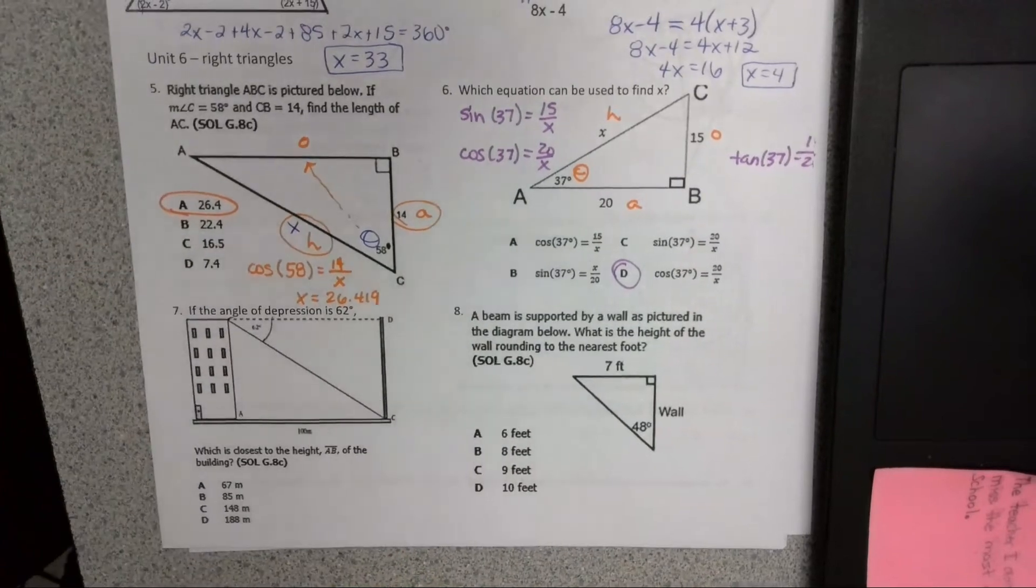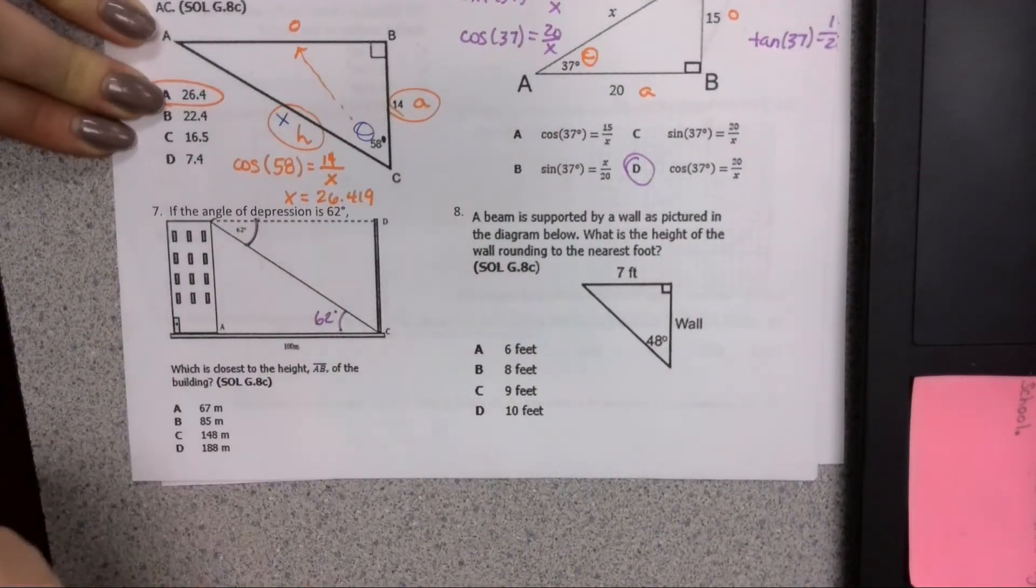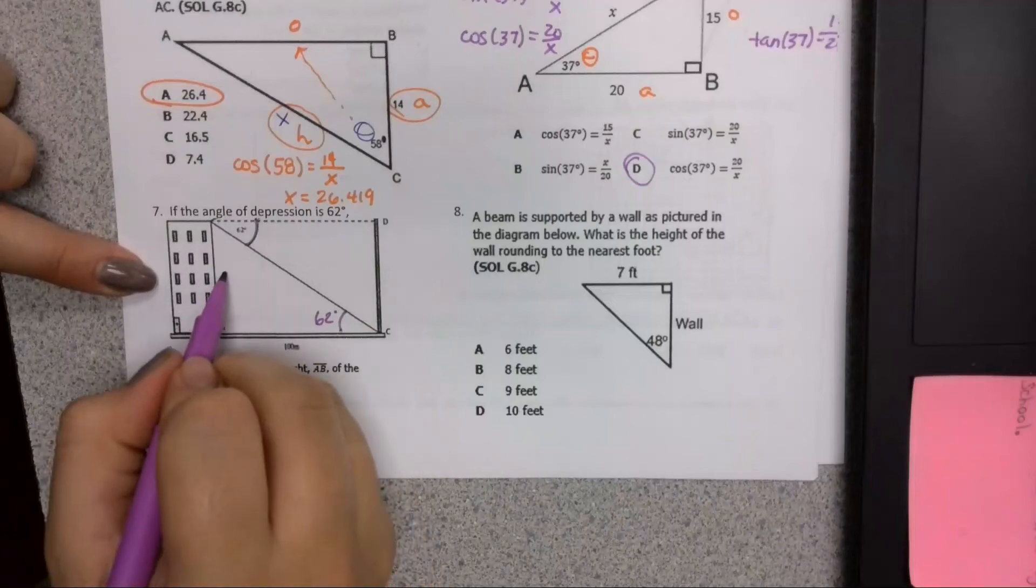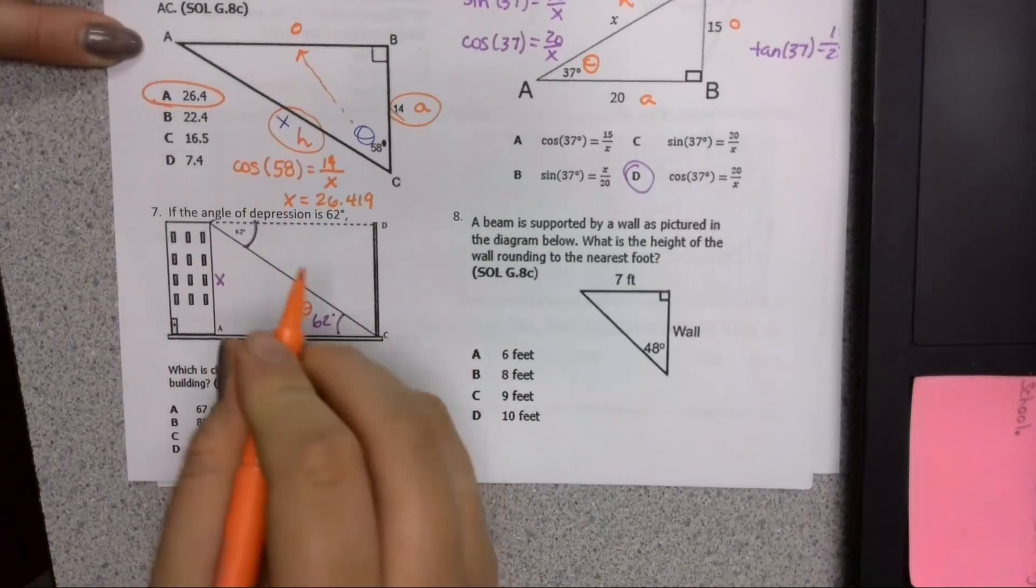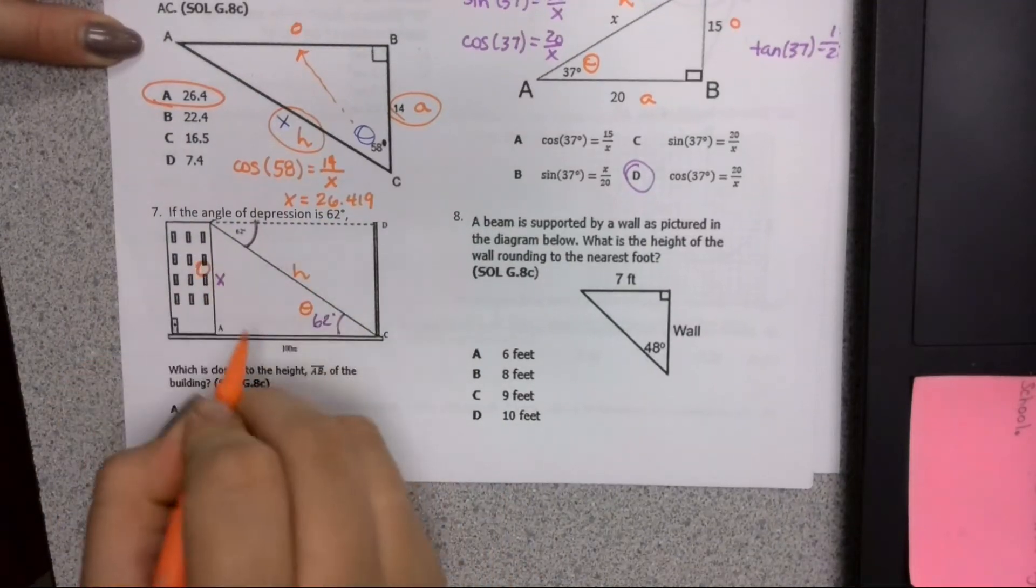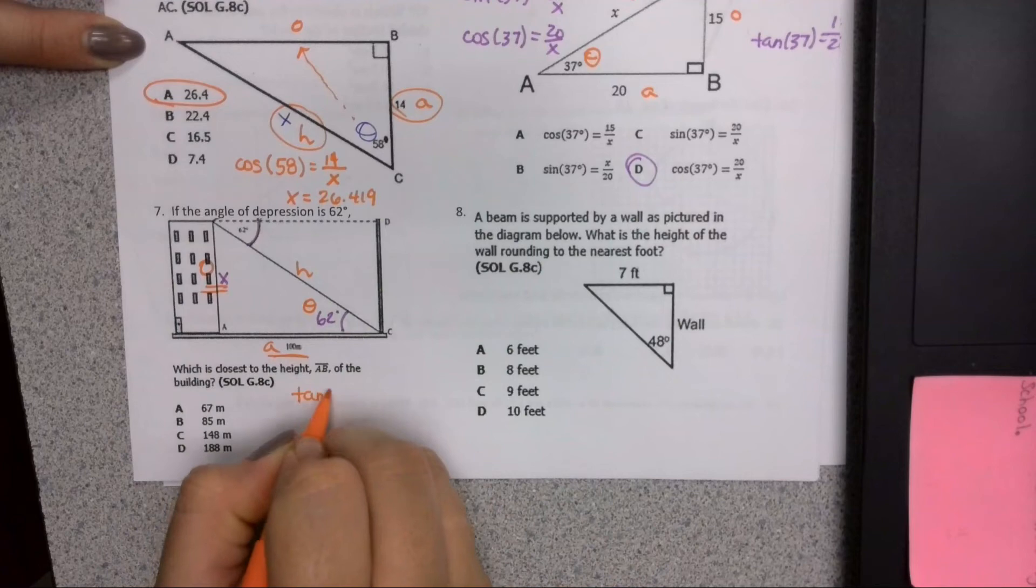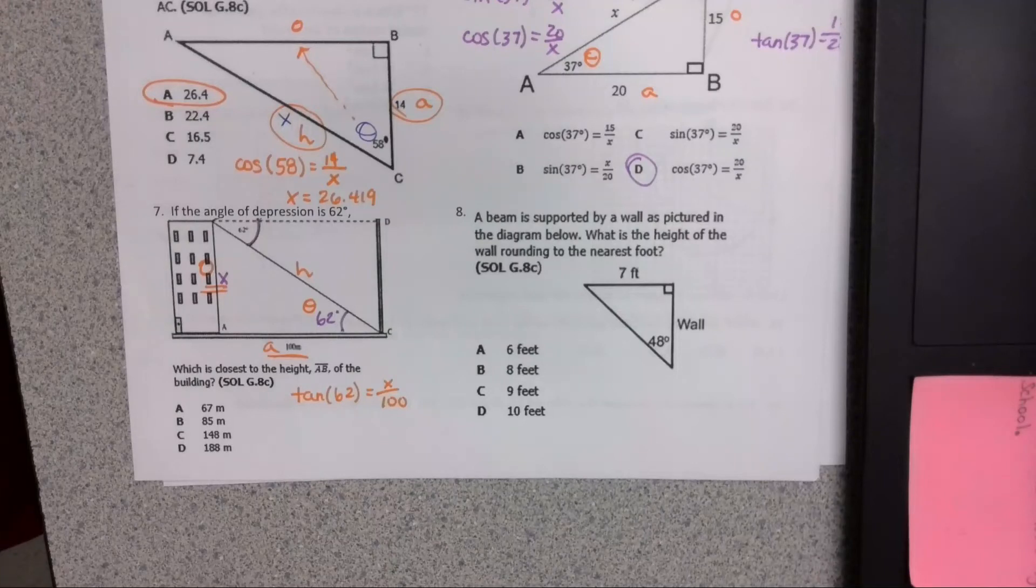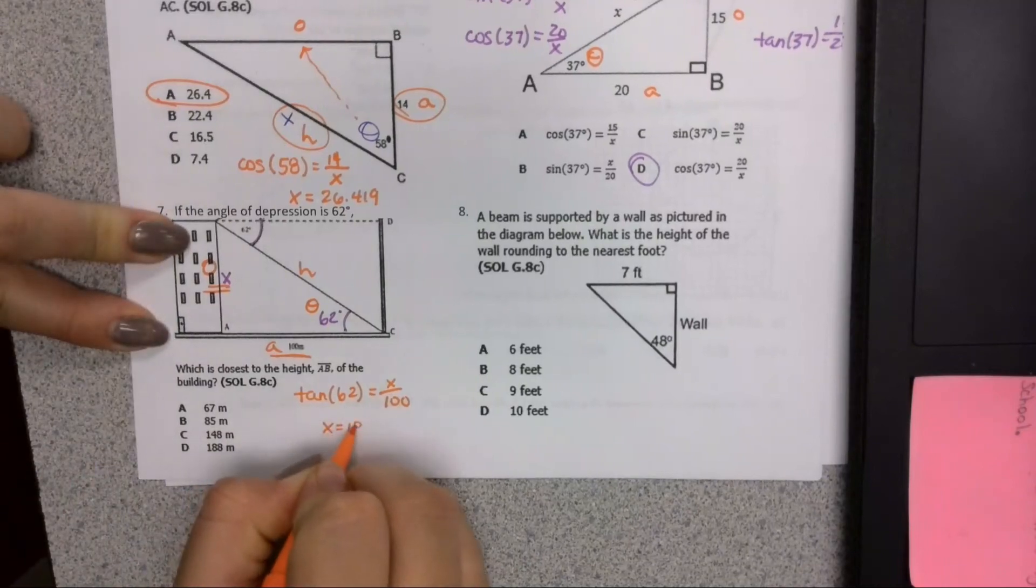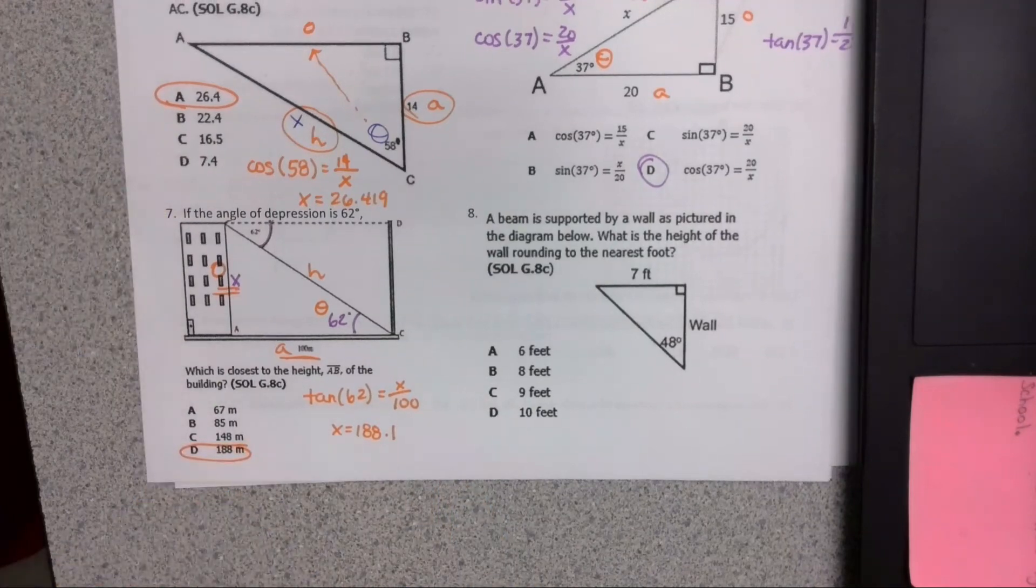For number seven, we know the angle of depression is 62, and if we know the angle of depression, it's the same thing as the angle of elevation. And we want to know the closest distance to the height of that building. Again, we're going to label theta, hypotenuse, this is the opposite, this is my adjacent. And since I'm dealing with opposite and adjacent, this is tangent, 62 equals x over 100. We're going to type that straight into Desmos, and we receive 188.1. Closest thing to that is just an even 188.